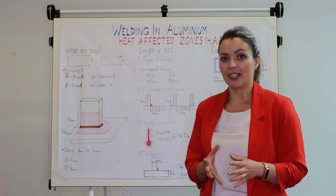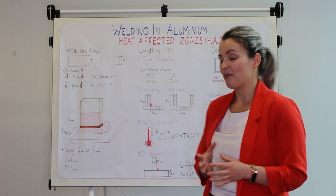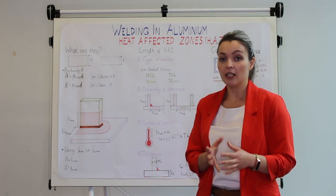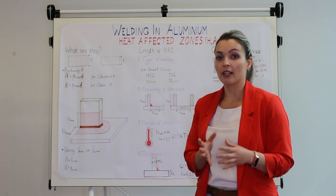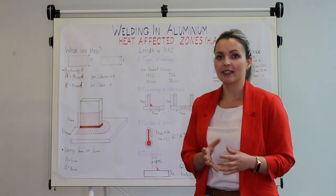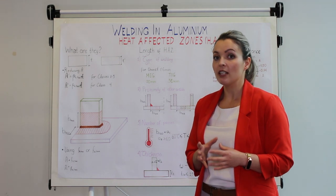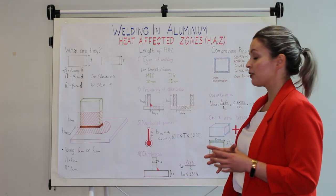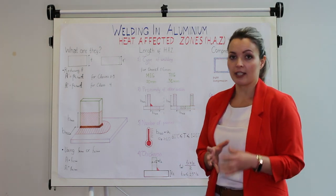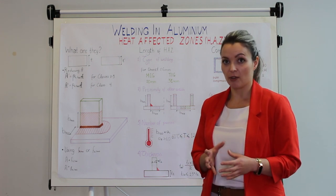Eurocode 9 suggests two ways to approach the heat affected zones and this softening of the material. One is to reduce the cross sectional area by a factor, the value of which depends on the class in which the cross section belongs to. The other way is to keep the cross section of the parent material and to reduce the mechanical properties using the 0.2 proof strength in the heat affected zone or the ultimate tensile strength in the heat affected zone. Again, which one we're going to use depends on which class our cross section belongs to.